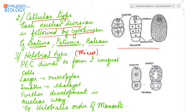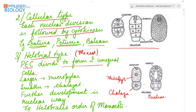The third type is the helobial type, or the mixed type. It is a mixture of cellular and nuclear behavior. The primary endosperm cell divides to form two unequal cells — the larger one is towards the micropyle and the smaller one is towards the chalaza. These two cells then behave in the nuclear way: karyokinesis occurs first, forming multi-nucleated cytoplasm, which then becomes cellular. This type is seen only in the helobial order of monocots.